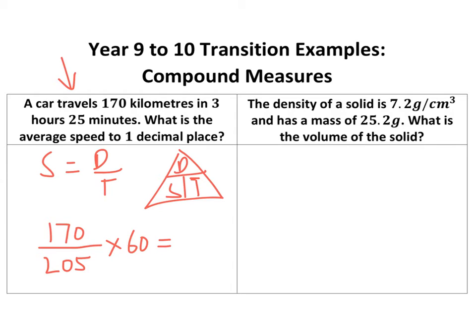If I do 170, I'm turning my calculator on. 170 over 205 times 60, and I end up with, it says to one decimal place, 49.8 kilometers per hour.